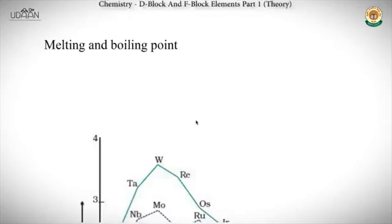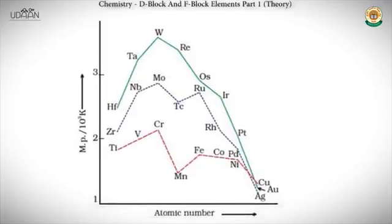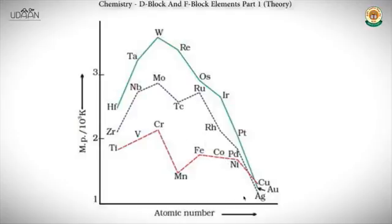Melting and boiling points of D and F block elements are high, attributed to strong metallic bonding involving participation of ns and (n-1)d electrons. In any row, melting points rise to a maximum at d⁵ (with the exception of Mn and Tc), then fall as atomic number increases. Zn, Cd, and Hg, due to their completely filled (n-1)d orbitals, have relatively low melting and boiling points compared to other elements of this block.